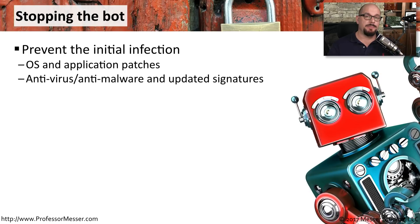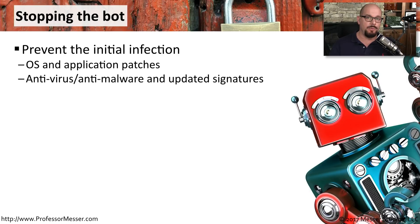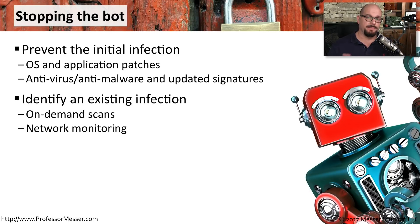Stopping a botnet is similar to stopping any other type of malicious software. We need to stop the initial infection by making sure that our operating system and our applications are updated to the latest versions. We also want to be sure we have the latest signatures for our antivirus and anti-malware software. You might also want to proactively scan your system every day or every week, and have your anti-malware software look deeper to see if there might be an infection. It's also good to monitor your network and check for any incoming or outgoing traffic that you may not recognize.